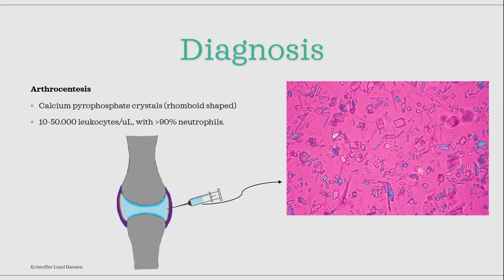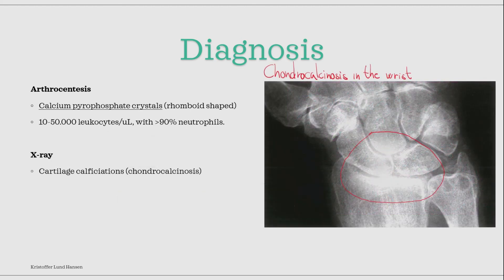This is in contrast to gout, which has 2,000 to 10,000 leukocytes per microliter, and septic arthritis, which can have over 100,000. X-rays can also be useful, especially in chronic cases. What you will typically see on an X-ray is chondrocalcinosis, which is calcification of cartilage in the affected joint.